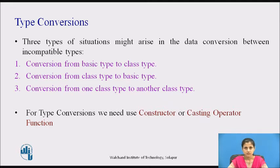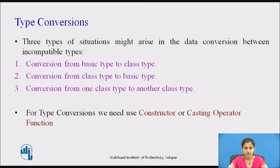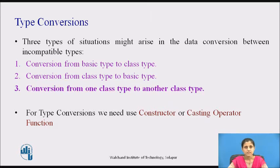As we know, three types of situations might arise in data conversion between incompatible types. First, conversion from basic type to class type. Second, conversion from class type to basic type. Third, conversion from one class type to another class type. In the previous video we have seen basic to class type and class to basic type conversion. In this video we will see conversion from one class type to another class type.